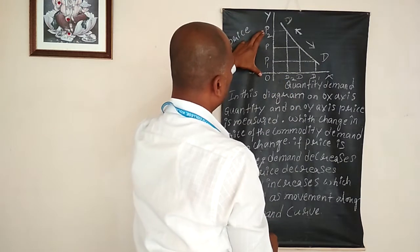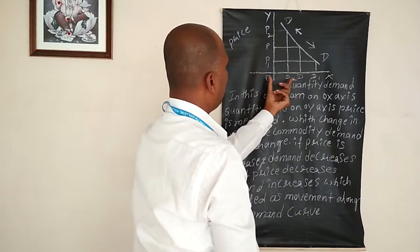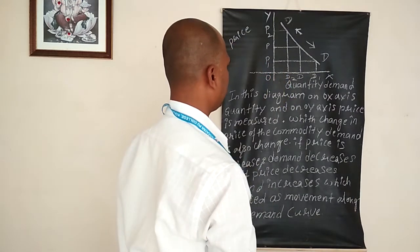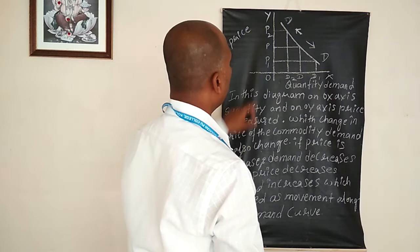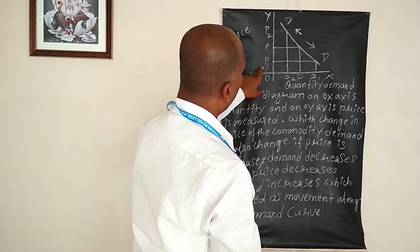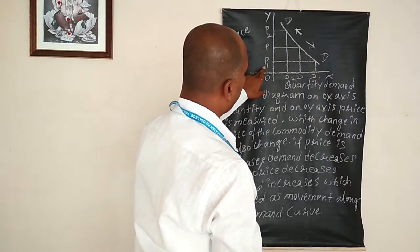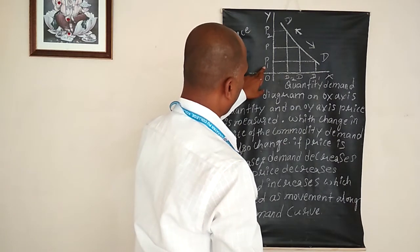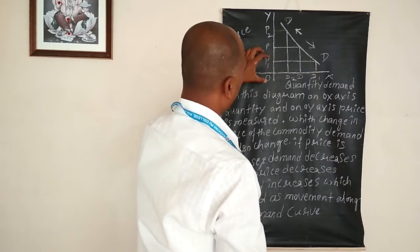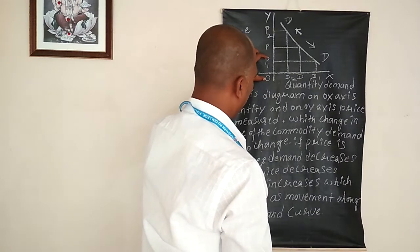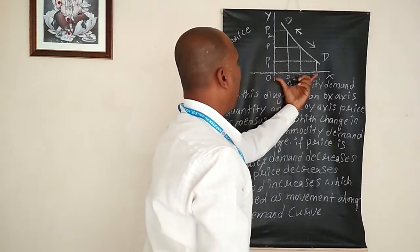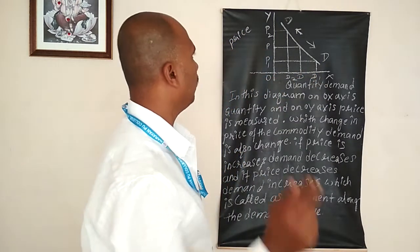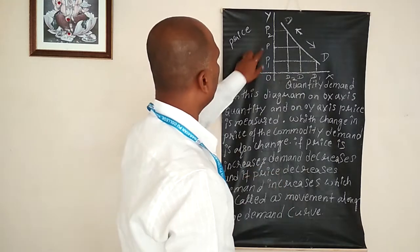When price is P1, price is less, demand is more — D1. So price is more, demand is less; price is less, demand is more.